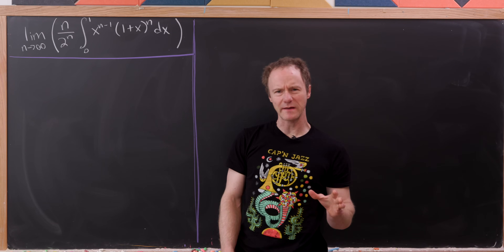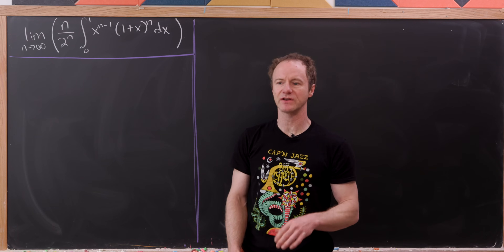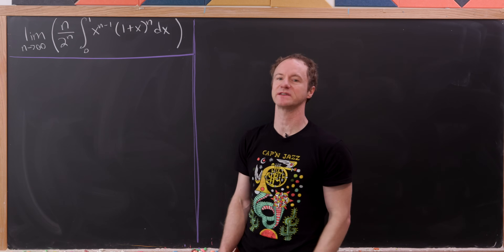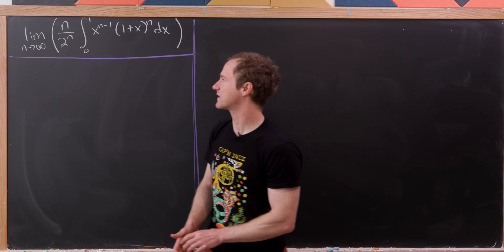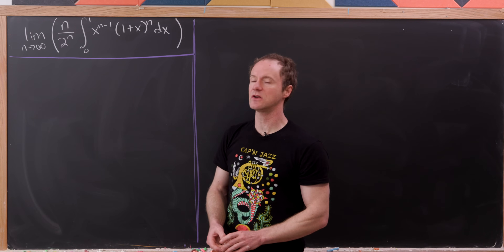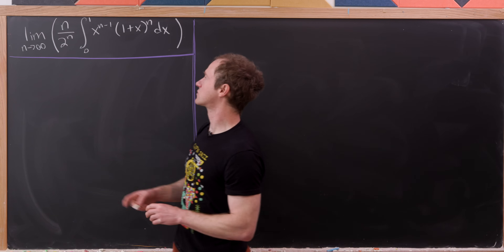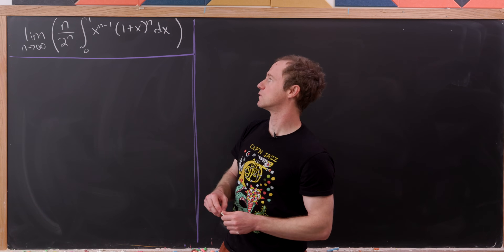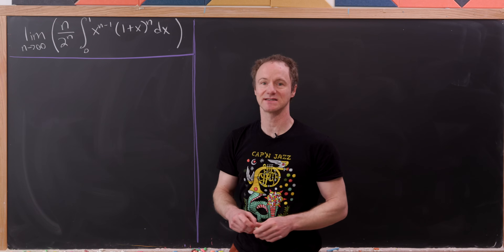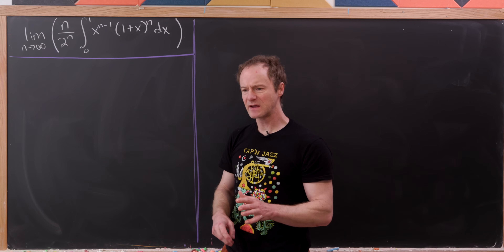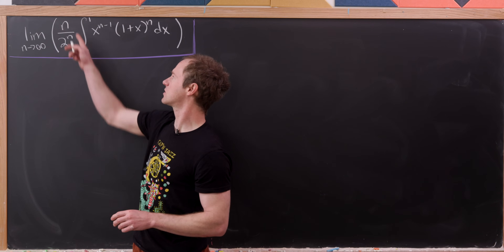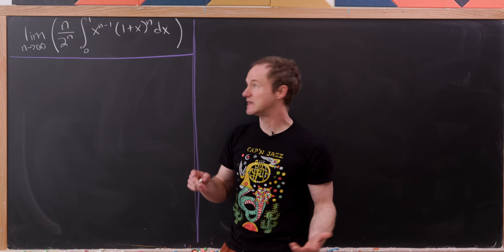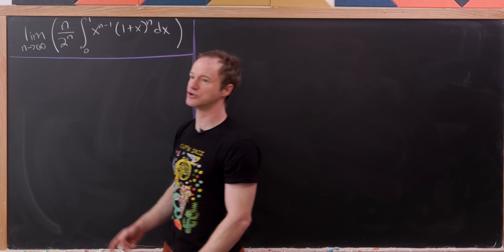Today we've got a really cool limit of an expression having to do with an integral. Let's look at it and I'll tell you why I think this is pretty cool. We've got the limit as n goes to infinity of n over 2 to the n times the integral from 0 to 1 of x to the n minus 1 times 1 plus x to the n. What I think is cool about this is that this term n over 2 to the n clearly approaches 0 as n is approaching infinity.